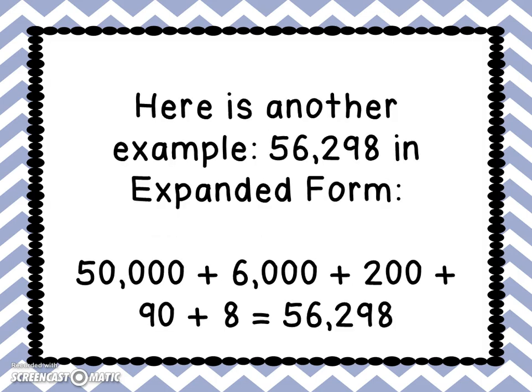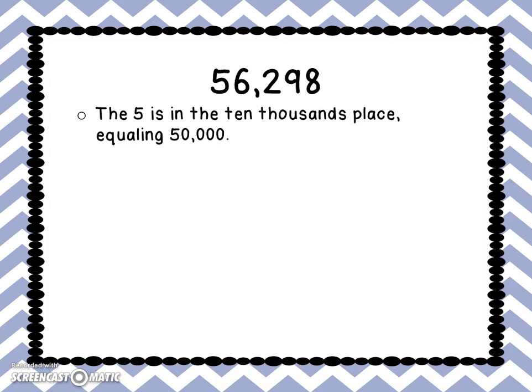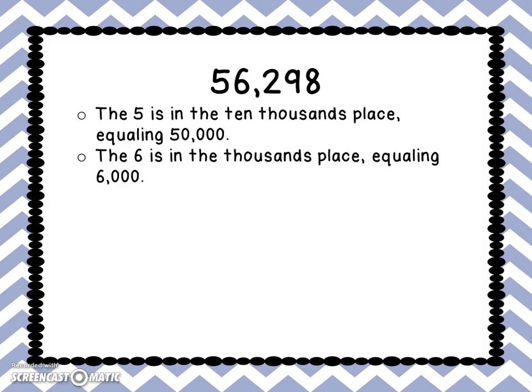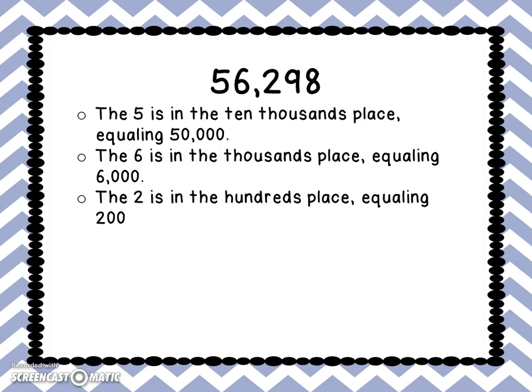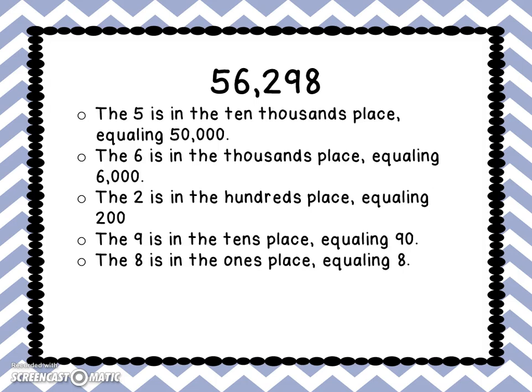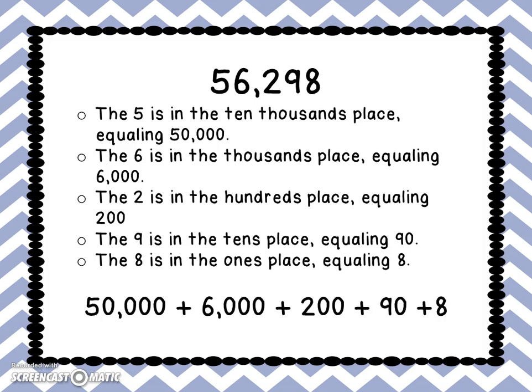Here is another example: 56,298 in expanded form. 50,000 plus 6,000 plus 200 plus 90 plus 8 equals 56,298. The 5 is in the ten-thousands place equaling 50,000 — we have 5 groups of 10,000. The 6 is in the thousands place equaling 6,000 — there are 6 groups of 1,000. The 2 is in the hundreds place equaling 200, two groups of 100. The 9 is in the tens place equaling 90, or 9 groups of 10. And the 8 is in the ones place equaling 8 — we have 8 single units.